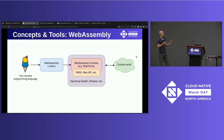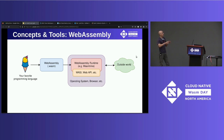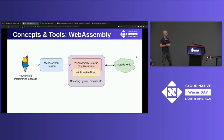You take your favorite programming language, compile to a WebAssembly module or component, and run it in an environment that very much resembles the JVM — but this is a WebAssembly runtime that interprets and just-in-time compiles the bytecode. We have various APIs to interface with the outside world: WASI for interacting with POSIX-style systems, Web APIs if you're running in the browser that you can create JavaScript shims for, and then you can run it anywhere.